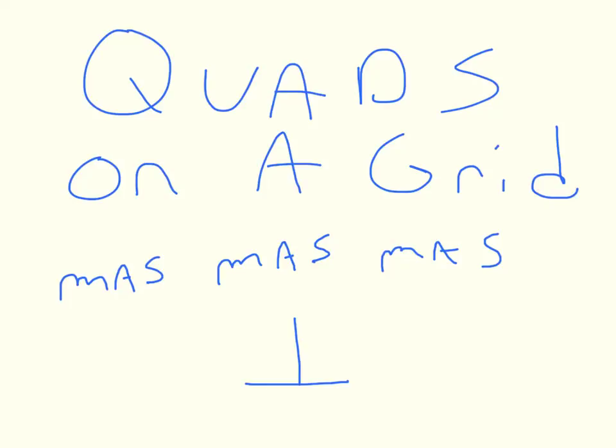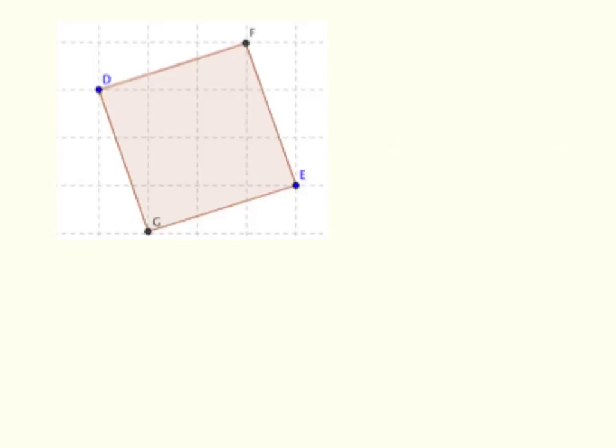We need to have one more look at these quads on the grid because we haven't looked at things that are perpendicular yet. It's still all about slope and all about Pythagorean theorem. Now, you think that's a square, but you've got to prove it. You've got to give me numbers, show evidence that that is a square.